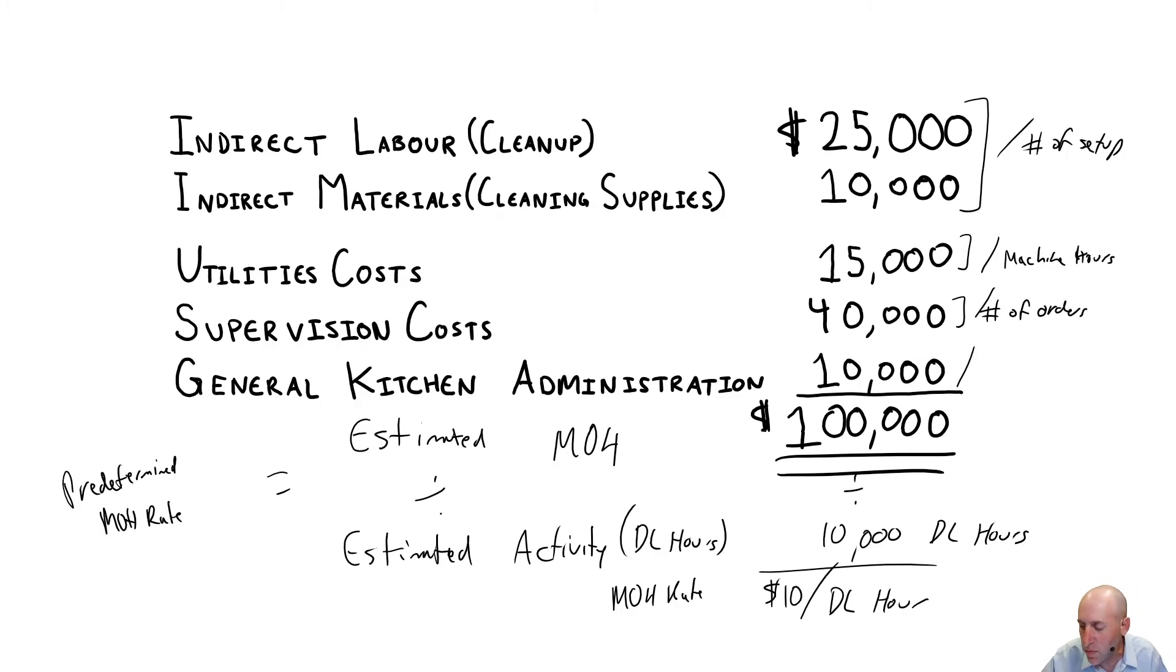General kitchen admin, let's just say that is based on direct labor hours, or that's at least what we would estimate. Well, now, based on this new system, we have four overhead rates. Not just one. We have four, but we might get better data out of our system. That's the hope of an activity-based costing system.